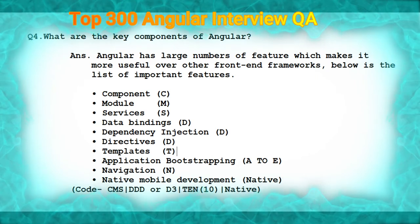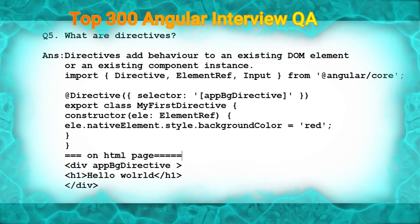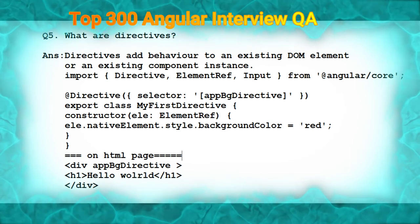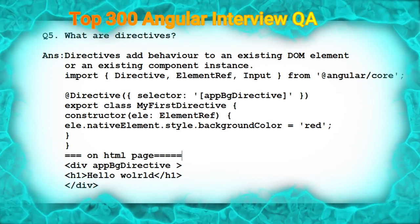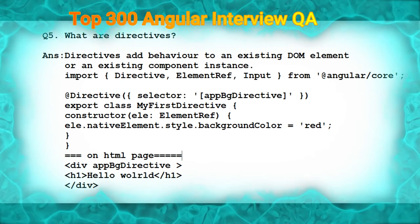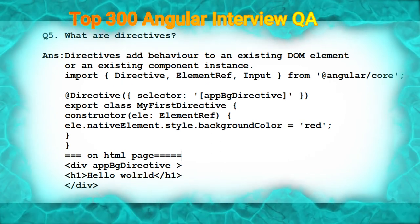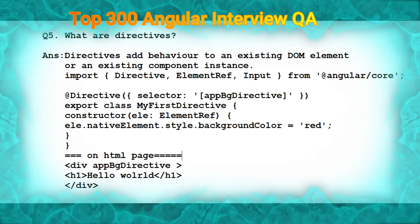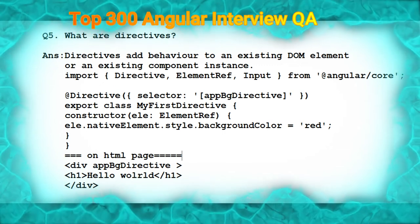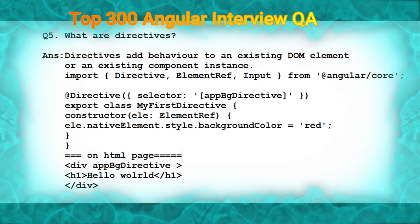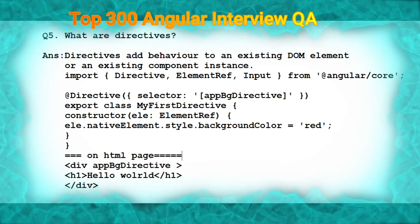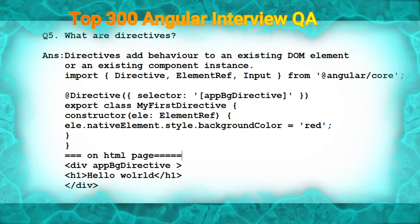The next question is: what are directives? Directives add behavior to an existing DOM element or an existing component instance. To create a directive, we import Directive, ElementRef, and Input from '@angular/core'. We create the directive class and decorate it with the @Directive decorator, which has a selector. Inside the constructor, ElementRef is instantiated, and we use element.nativeElement.style.backgroundColor to set it to red. Finally, on the HTML page we inject the selector, for example appBgDirective.